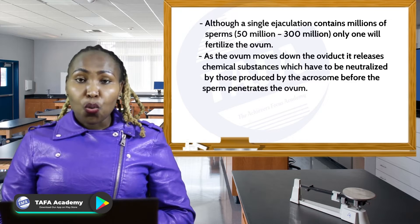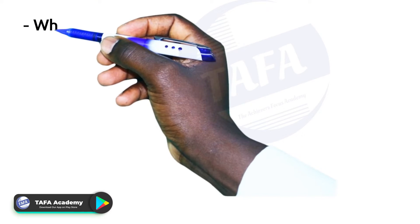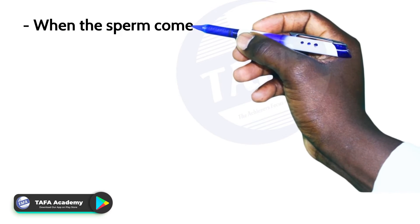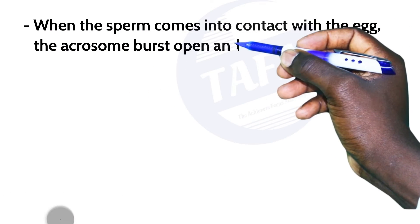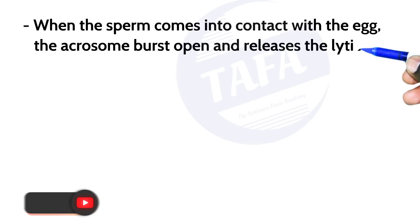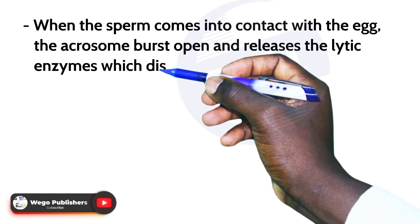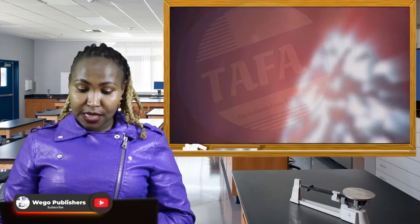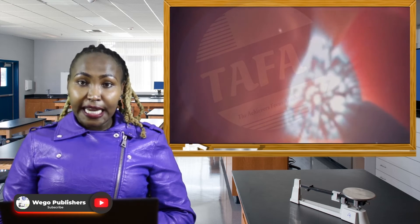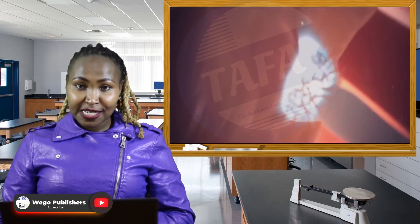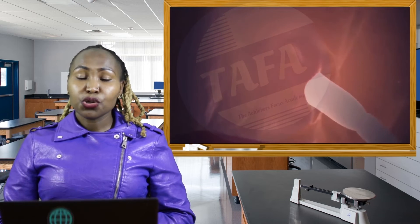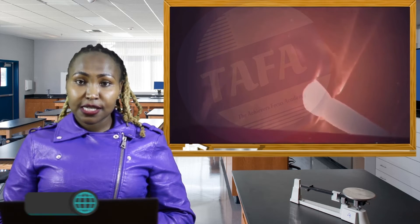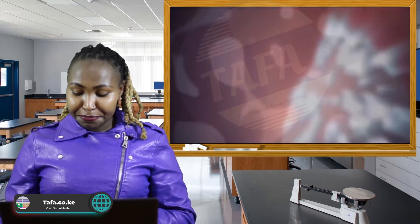When the sperm comes into contact with the egg, the acrosome bursts open and releases lytic enzymes. These lytic enzymes are required to digest the egg membrane, also referred to as the vitelline membrane.